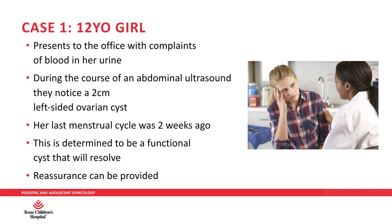In the first case, a 12-year-old girl presents to the office with complaints of blood in her urine. During an abdominal ultrasound, a two-centimeter left-sided ovarian cyst is noticed. Her last menstrual cycle was two weeks ago, and it is determined to be a functional cyst that will resolve. In this situation, we can provide reassurance to the patient and her family.